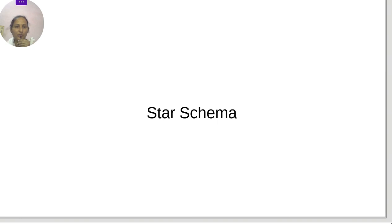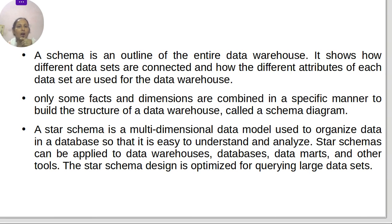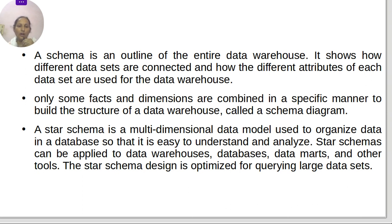Just a collection of large or huge datasets is not enough for a database to create any kind of information. So what is the star schema? First we will understand it theoretically. A schema is an outline of the entire data warehouse. It shows how different data sets are connected and how the different attributes of each data set are used for the data warehouse.